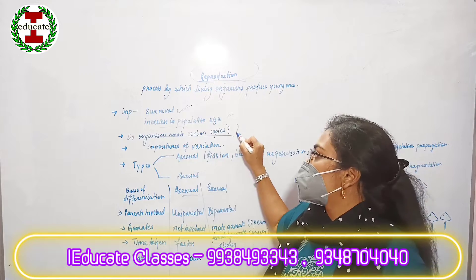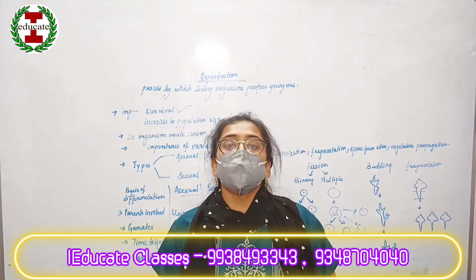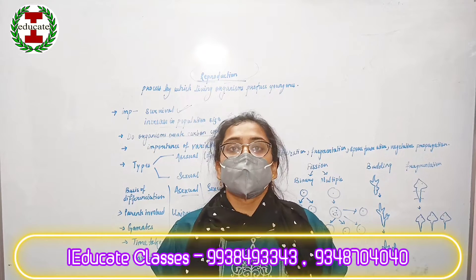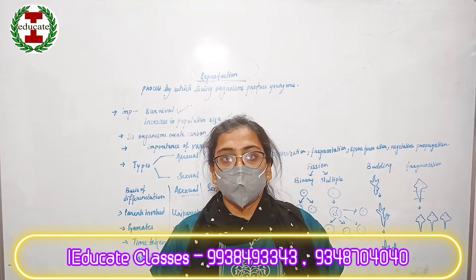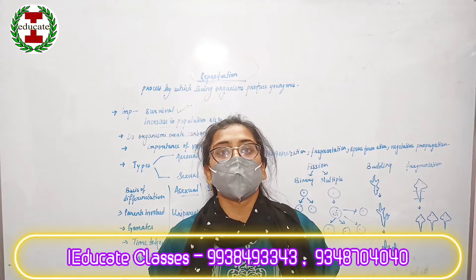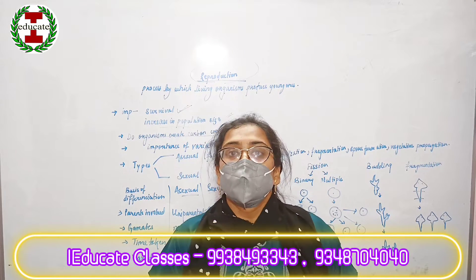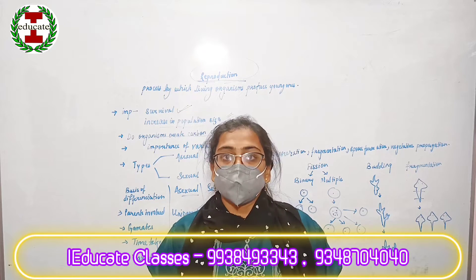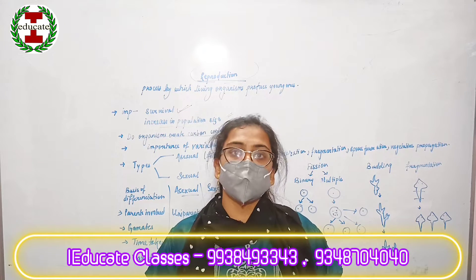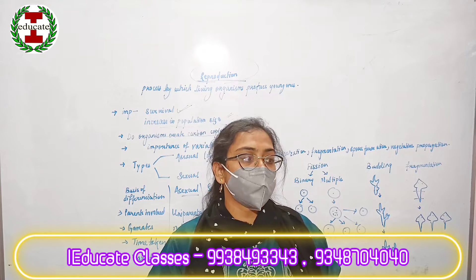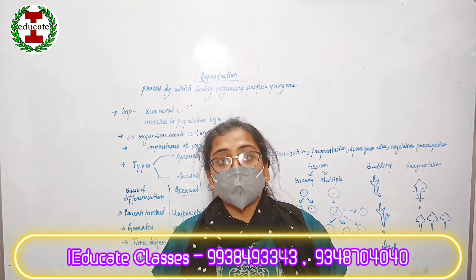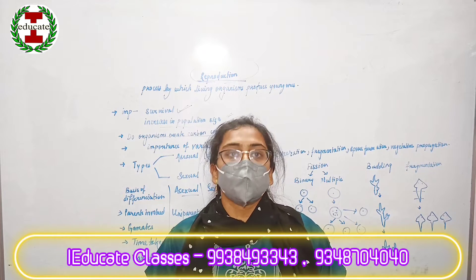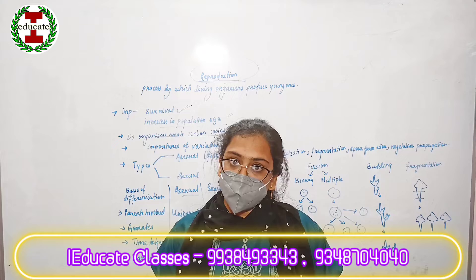Do organisms create carbon copies of themselves? Organisms at times create carbon copies of themselves, but there is a change in genetic material. During reproduction, our genetic material — that is the DNA — is transmitted from the parent organism to their offsprings. These genetic materials can look identical, or the organisms may look more physically identical, but genetically there is a variation in our genetic material or DNA.